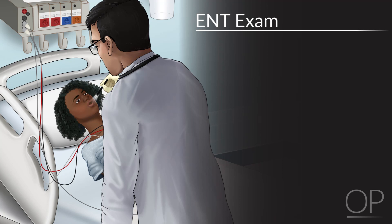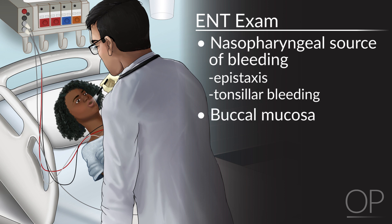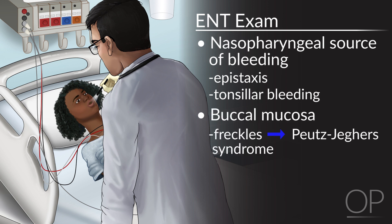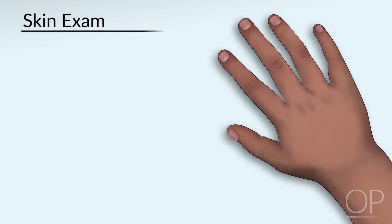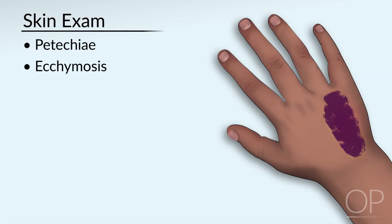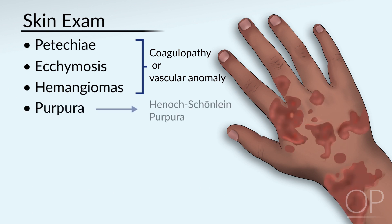If your patient is stable, you can now do a more thorough physical exam to look for possible etiologies. This exam should include an ENT examination. You should examine the nasal pharynx for a source of bleeding, such as a nosebleed or epistaxis, or tonsillar bleeding. You should also examine the buccal mucosa — freckles on the buccal mucosa can suggest Peutz-Jeghers syndrome. Evidence of telangiectasias can be suggestive of Osler-Weber-Rendu syndrome. Aphthous mouth ulcers can suggest Crohn's disease. When you examine the skin, you should look for evidence of petechiae, ecchymosis, or hemangiomas, which will suggest a coagulopathy or other vascular anomalies. In the setting of bloody diarrhea, purpura can also suggest Henoch-Schönlein purpura.